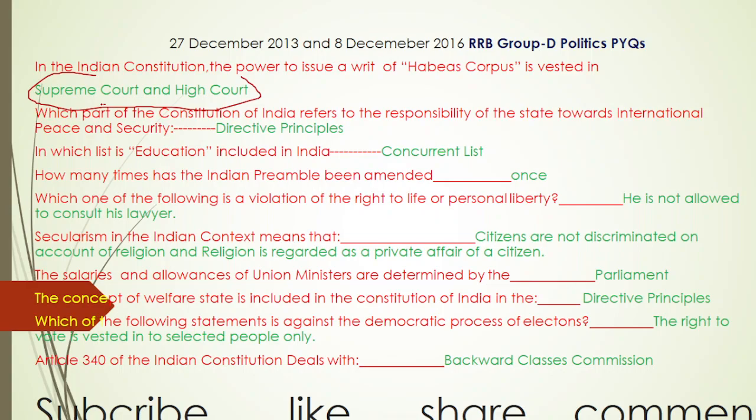The next question: The salaries and allowances of union ministers are determined by — the correct answer is Parliament. Parliament has the only authority to determine the salaries and allowances of union ministers.